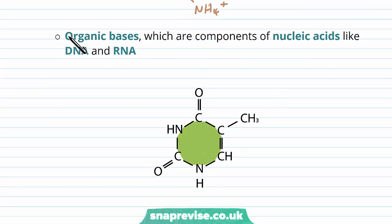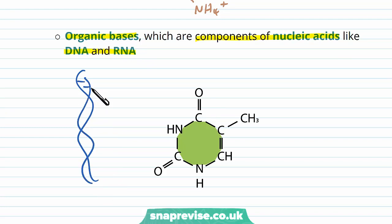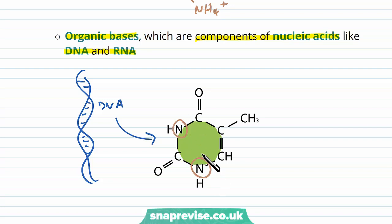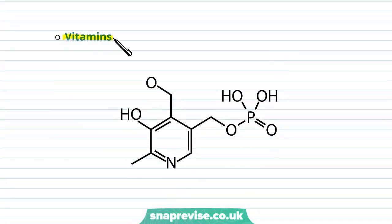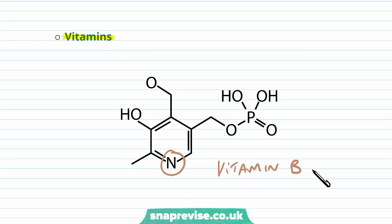Nitrogen is also needed to make organic bases, which are the components of nucleic acids like DNA and RNA. The molecules of DNA and RNA contain genetic information and have organic bases which contain nitrogen atoms. We have a lot of DNA in all of our cells, so we need lots of nitrogen, and therefore we take this from ammonium ions. Our body also makes vitamins, and other organisms make different vitamins. They can contain nitrogen too — for example, vitamin B. There are different types of vitamins, and we need nitrogen atoms in order to form these so they can carry out their various functions.